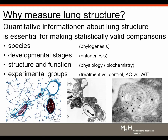Why should we quantitate or measure lung structure? Because this quantitative information is essential for being able to make statistically valid comparisons, at all levels of microscopic resolution from light microscopy to electron microscopy. Comparisons can be between different species, different developmental stages, or correlating structural data with physiological or biochemical data. Most commonly it is a comparison between experimental groups, such as a control group versus a treatment group in an animal model of lung disease, or a specific knockout compared with a wild type.